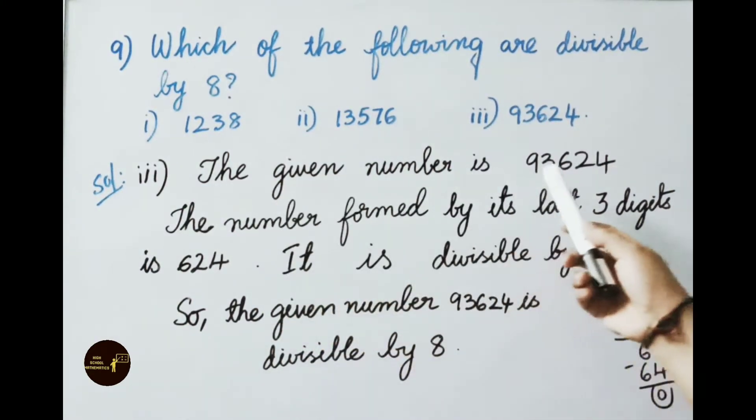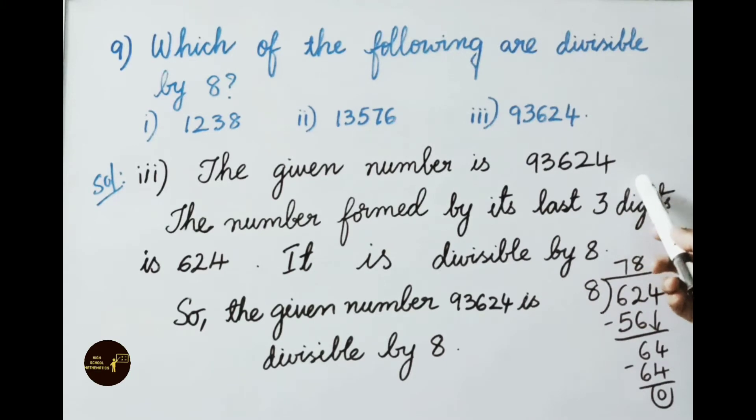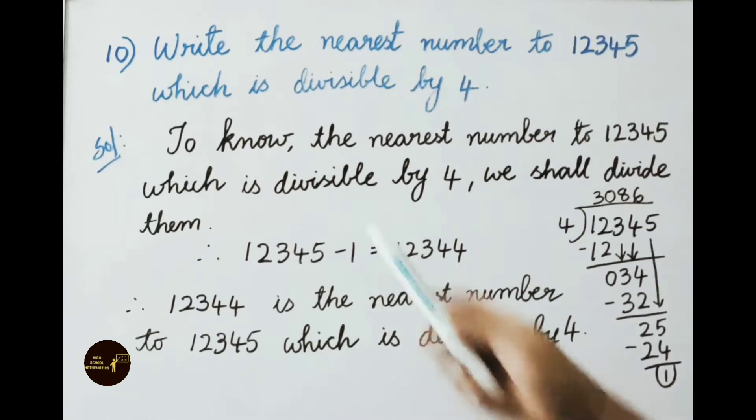See the third sum now. The given number is 93624. The number formed by its last 3 digits is 624. Now let us check 624 divisible by 8 or not. 8 table, 8 sevens are 56. 62 minus 56 we get 6. Now write on the next digit 4. 8 eights are 64. So 64 minus 64 leaves a remainder 0. Therefore 624 is divisible by 8. So the given number 93624 is divisible by 8.